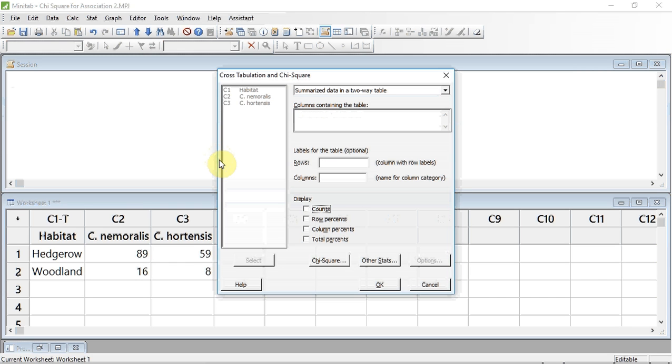I now need to tell Minitab where to find our data. I do that by clicking in the Columns containing the Table box, and then selecting the data column by column. We have data in Column 2. I'm going to select it and press the Select button, and data in Column 3. I'm going to select it and press the Select button. These two columns also contain our column names. I now need to tell Minitab where to find the row names to the table. I do that by pressing in the Row box. Our row names are in C1. I'm going to select that and go down to the Select button.